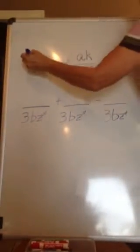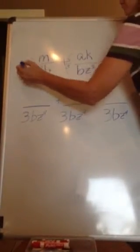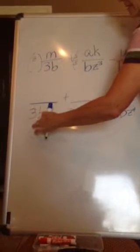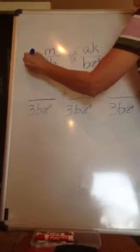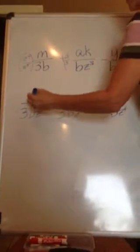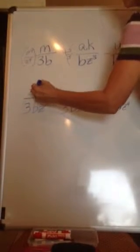So there's no z here, so we have to multiply both the numerator. We get from 3b to this denominator, we multiply by z to the fourth. So our numerator becomes z to the fourth m.